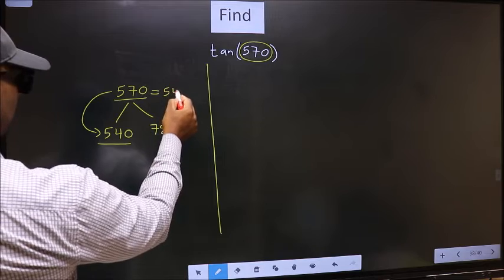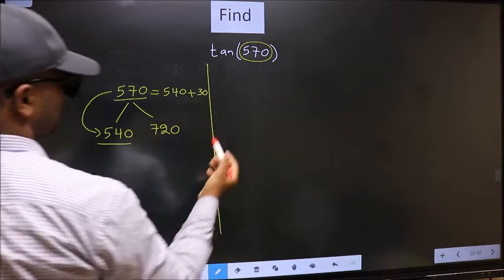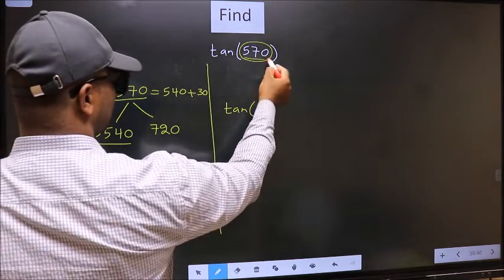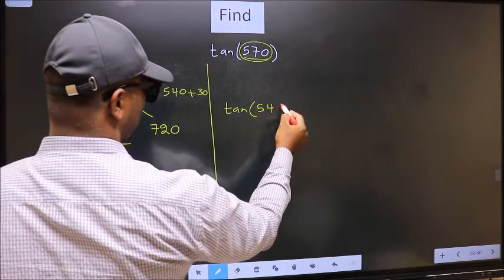Now we should write 540 plus 30. So this will become tan, in place of this we write 540 plus 30.